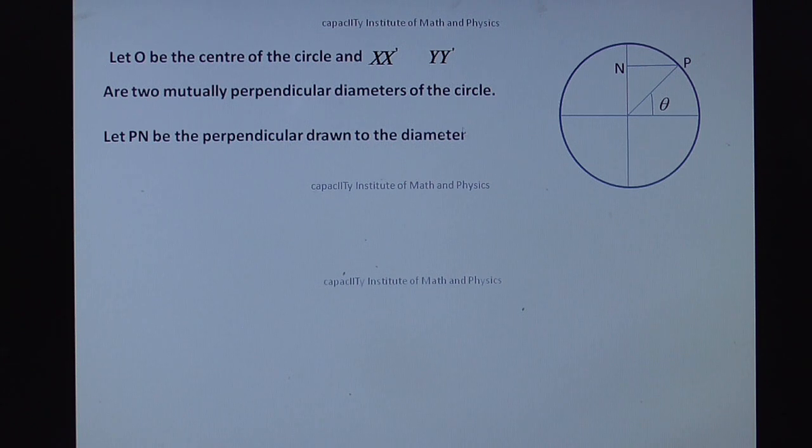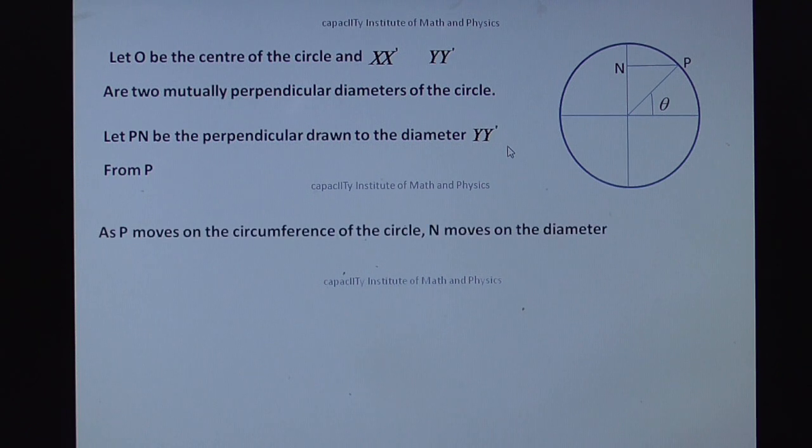Now let P, N be perpendicular down to the diameter. This is the P, N line, this perpendicular down to diameter Y, Y dash. The next one, from P, as P moves on the circumference of the circle, N moves on the diameter about the origin O.